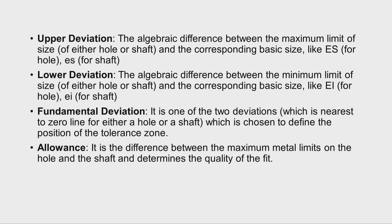The next terminology is upper deviation. It is the algebraic difference between the maximum limit of size of either a hole or shaft and the corresponding basic size. It is designated by capital ES for holes and small es for shafts. Similarly, lower deviation is the algebraic difference between the minimum limit of size of either hole or shaft and the corresponding basic size — capital EI for holes and small ei for shafts.